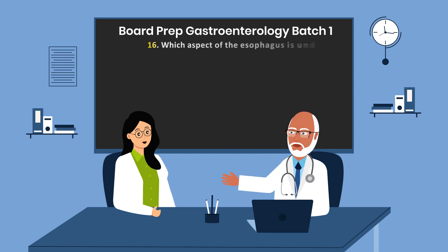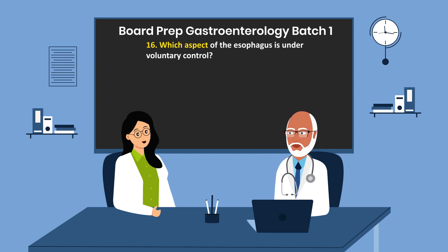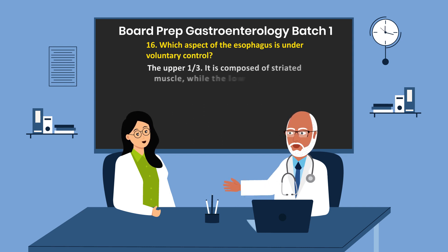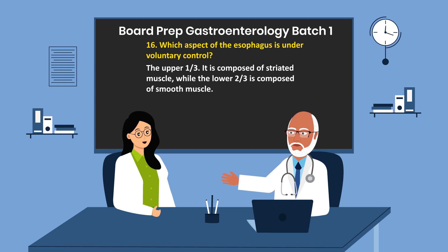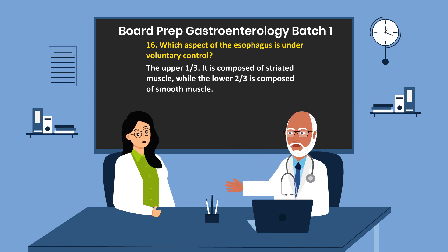Question 16. Which aspect of the esophagus is under voluntary control? The upper one-third. It is composed of striated muscle, while the lower two-thirds is composed of smooth muscle.